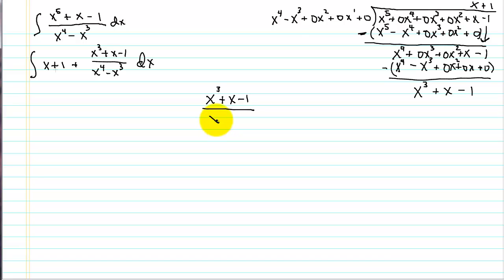So let's work on our partial fraction decomposition over here. And our bottom we can factor out an x cubed. And we get x minus one. So we have repeated fraction here. So we need to take care of that when we do our decomposition. That's going to be a B. Remember we've got to go all the way up to the x cubed. And I only have one of the x minus ones.